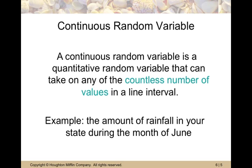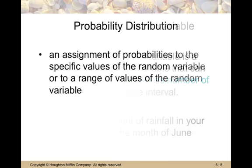A continuous random variable, however, is a quantitative random variable that can take on any of the countless number of values in a line interval. So between any two points on a line, there's an infinite number of points. The amount of rainfall in your state during the month of June can take on any number at all on the number line. Today we're going to focus on discrete random variables, but it's important to go ahead and define the continuous ones.